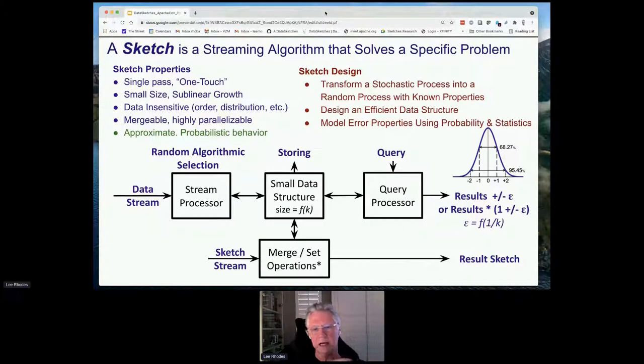Or it can be multiplicative error, which is times one plus or minus epsilon, which means it's relative error. The fourth major box allows merging and set operations. Some sketches allow full set operations like intersection and set difference, but all sketches allow merge capability without loss of accuracy. The result of a merge or set operation is yet another sketch.